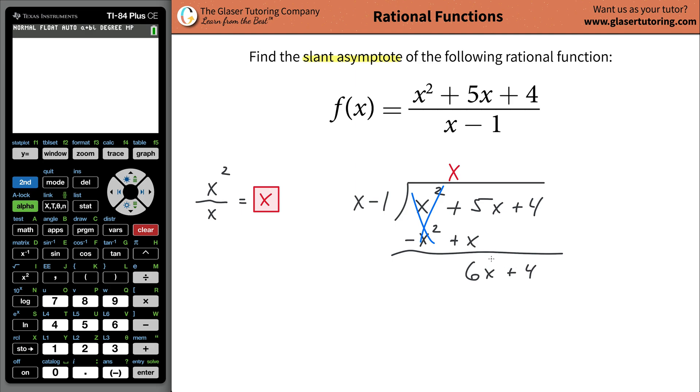Now you start the process over again. As long as the power of x here, which is to the first, matches or is greater than the power of x here, which is to the first, you continue the process. If this x wasn't here, you'd be done.